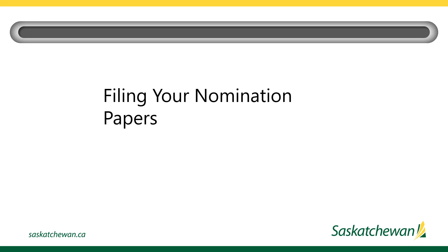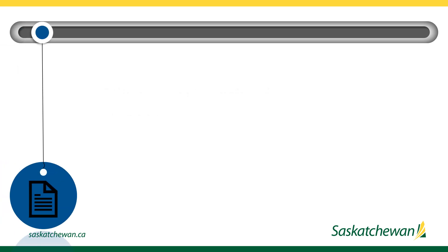After determining if you are eligible and deciding that you want to run for council, the following steps will assist you with filing the nomination paper. Obtain a nomination paper and public disclosure statement form from your municipality, and complete the forms. Ensure the public disclosure statement is attached to the nomination paper.